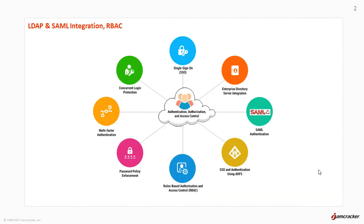The first step in governance is to control access to information and resources. Poor access governance results in financial and compliance risks through improper segregation of duties or when users have unauthorized access to information or other resources.